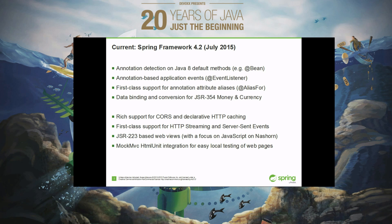We have support for JavaScript-based web views, which goes along with a revision of the JSR 223 support in core Spring — the scripting engine abstraction. We support in particular Nashorn, the Java 8 JavaScript engine, but it's generally usable with any other scripting provider.